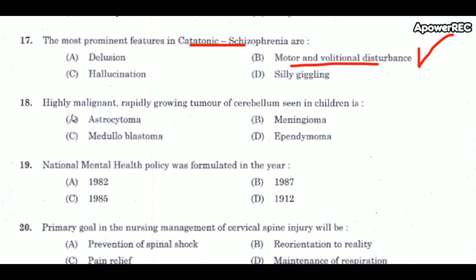Next question: a highly malignant, rapidly growing tumor of the cerebellum seen in children is medulloblastoma. Medulloblastoma is the most common childhood malignant brain tumor, and immediate surgery is needed.